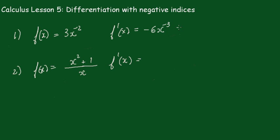The second one is a little bit harder. Before we can apply the rule, we need to get it in index form. Split this up and write it as x²/x + 1/x.